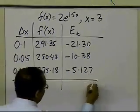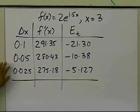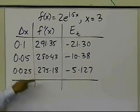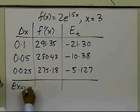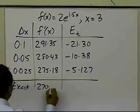So what I'm trying to show you here is that as you keep on making delta x to be smaller and smaller, the values which you are getting for the derivative of the function are getting closer and closer to the exact value.